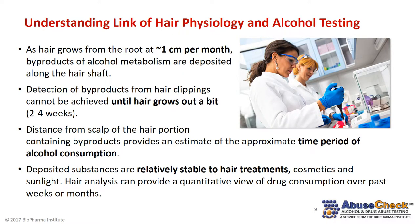Let's take a look at how hair physiology impacts alcohol testing. Hair grows at approximately one centimeter or 0.4 inch per month. As it grows, byproducts of alcohol metabolism are deposited along the hair shaft. These metabolic products from hair clippings cannot be detected until hair grows out a bit, typically two to four weeks. The distance from the scalp that the hair sample is taken can provide an estimate of the approximate time period of alcohol consumption. These deposited substances are relatively stable to hair treatments, cosmetics, and sunlight.